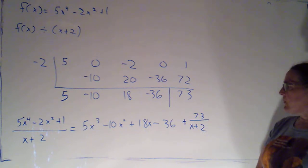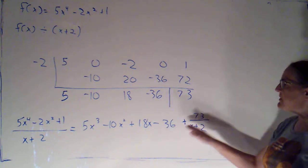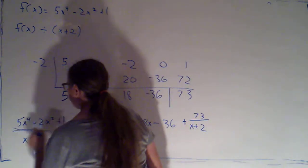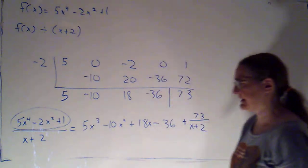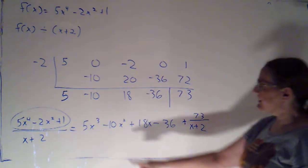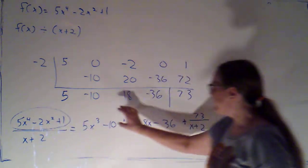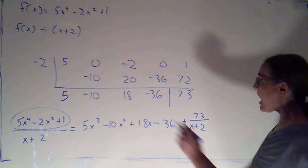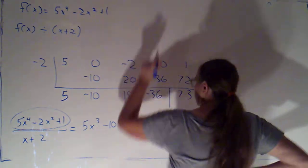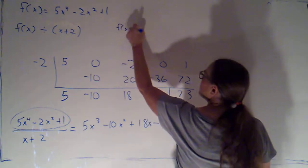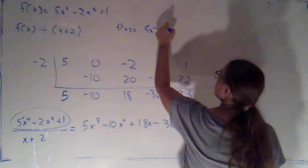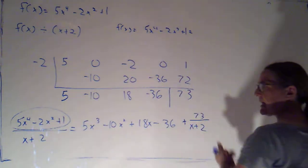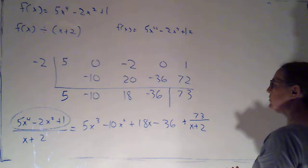I want to just point out that this also gives me a way that I could rewrite my original function f of x. That was my original f of x. If I were to multiply over both sides by x plus 2, I would get f of x, which was 5x to the 4th minus 2x squared plus 1.